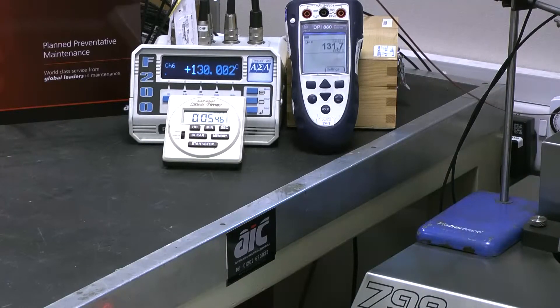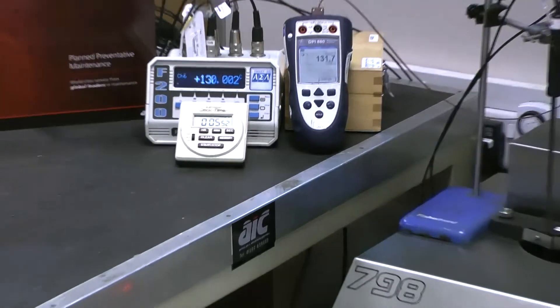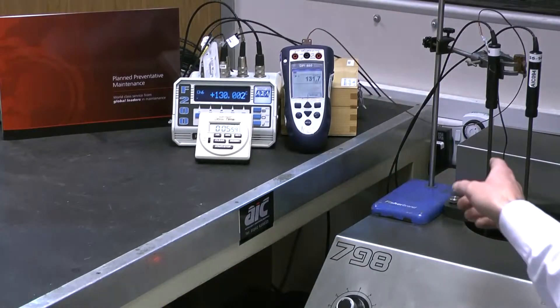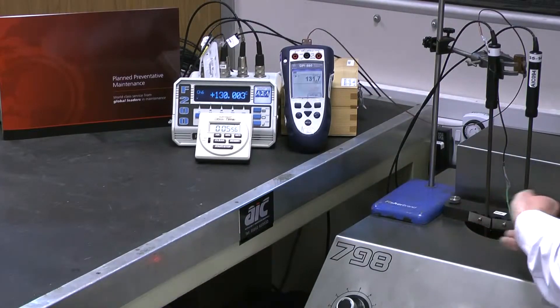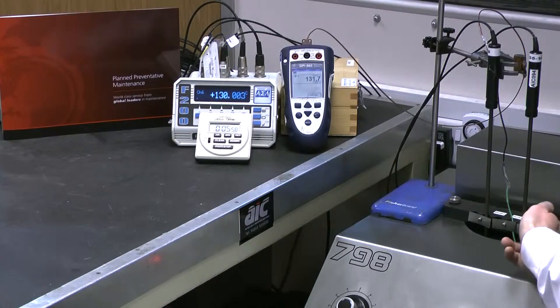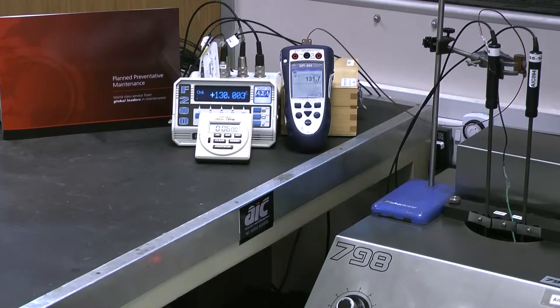And the calibrator is now reading 131 degrees. Again, because now the Type J cable does not have temperature gradient, or very little, almost all of the temperature gradient is in the Type K thermocouple, and that's the cable we need to know the character of in order to get an accurate measurement.